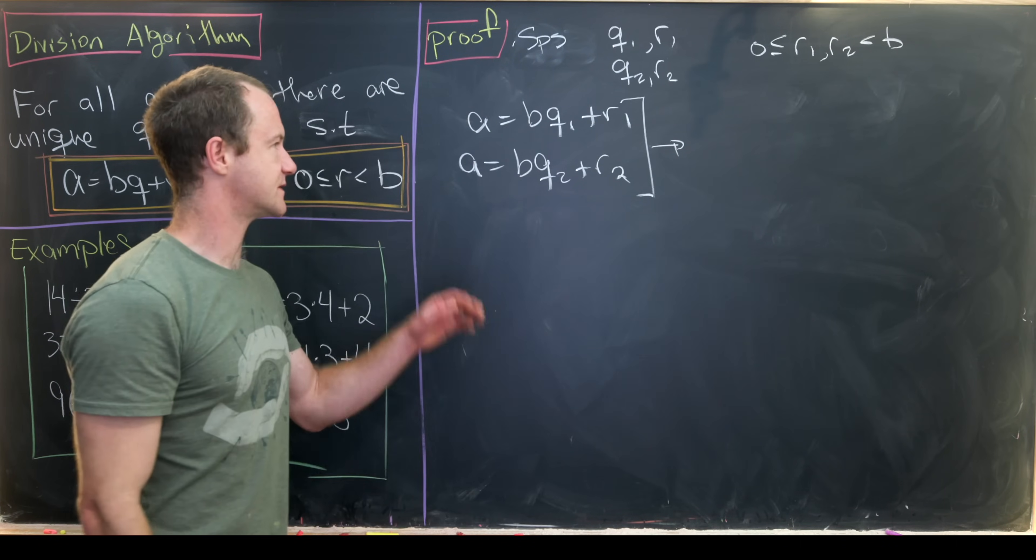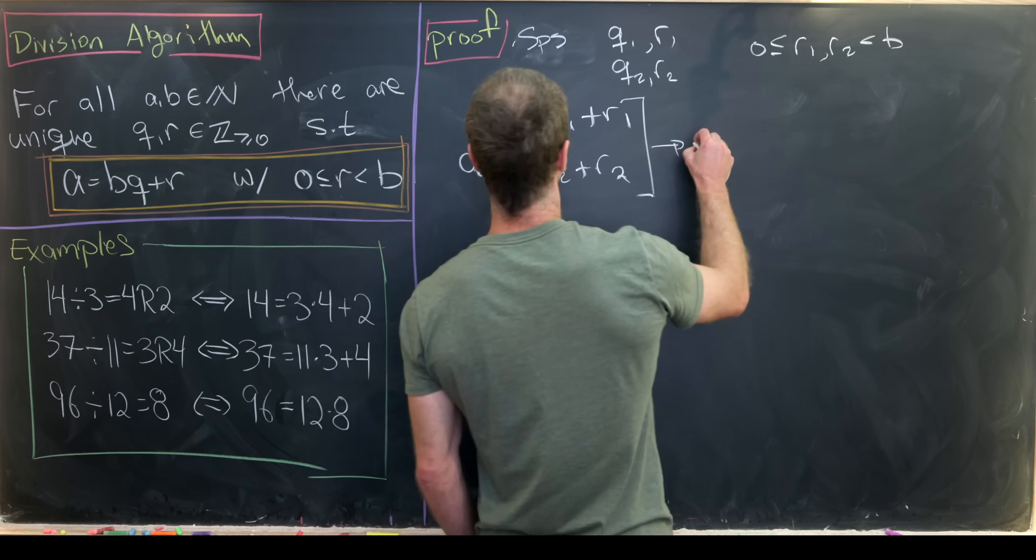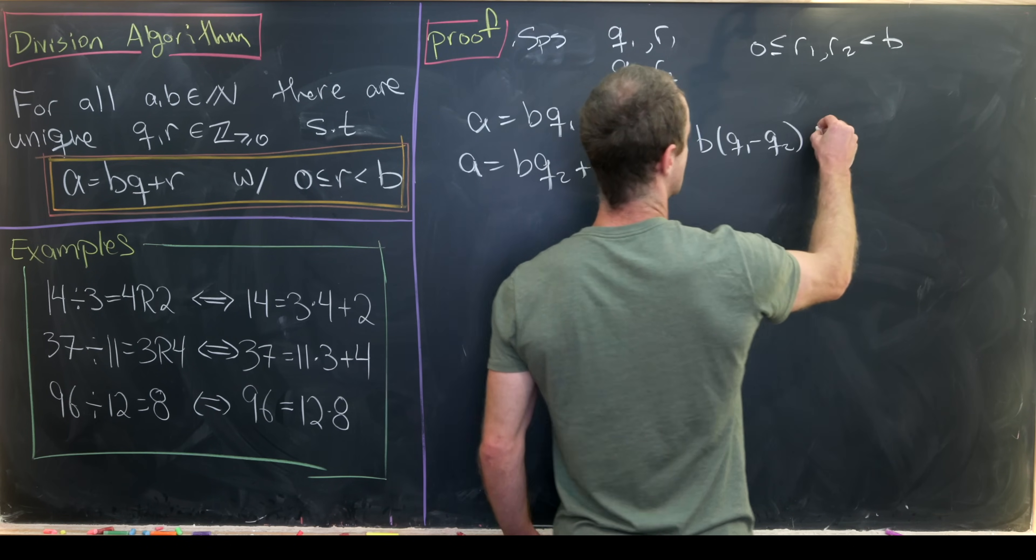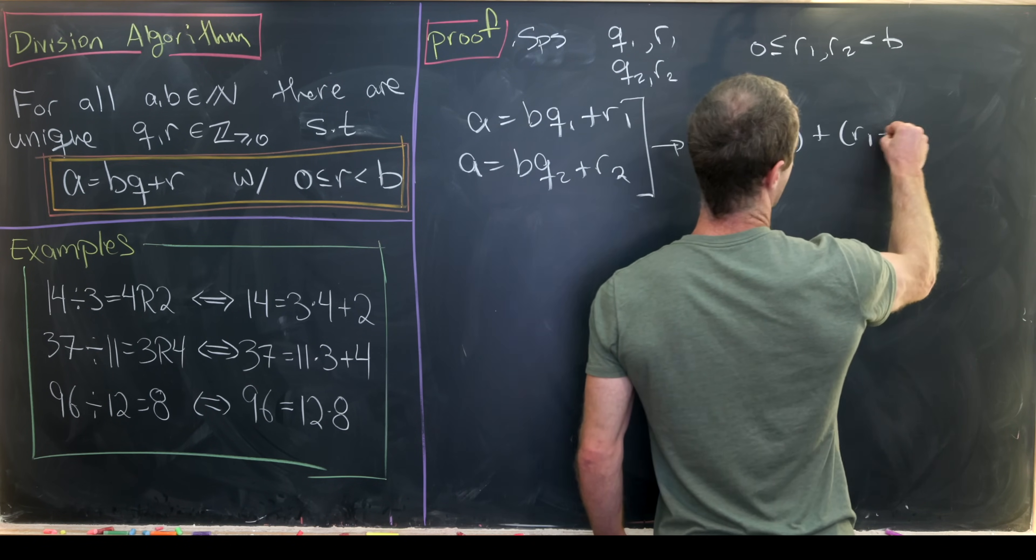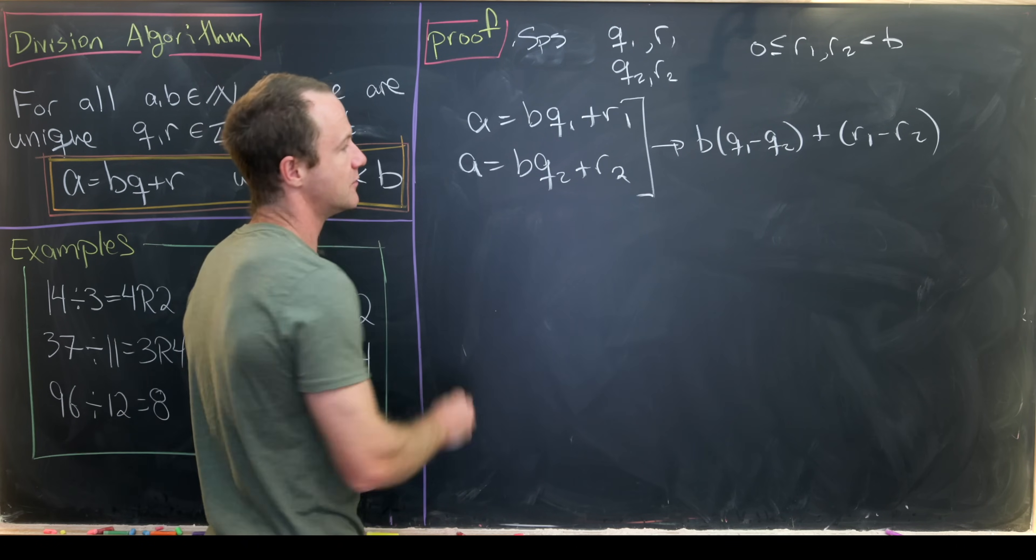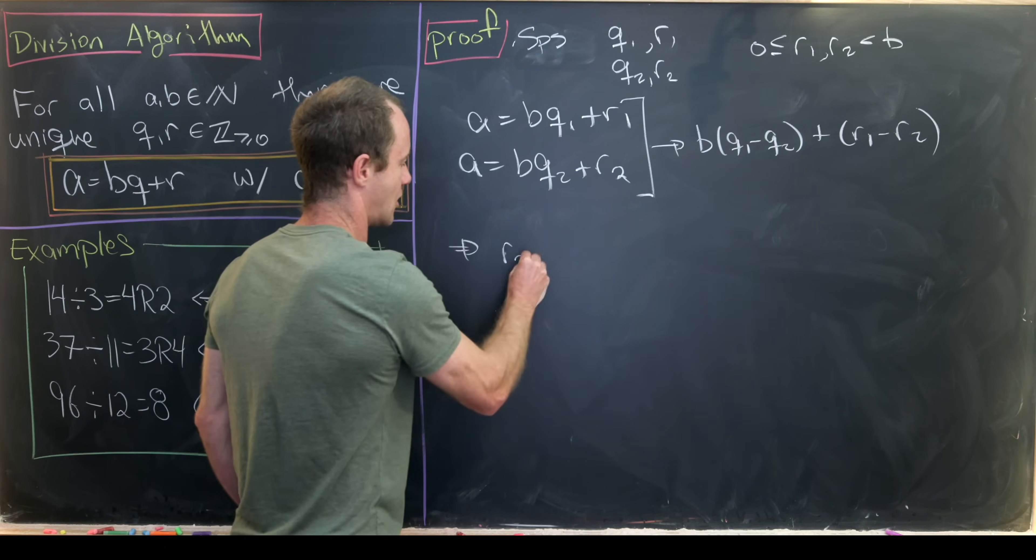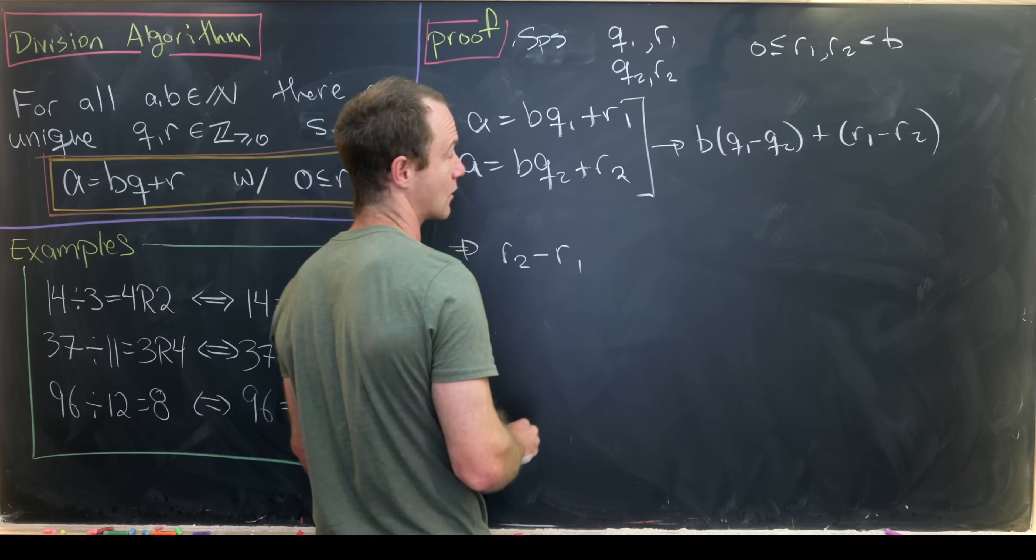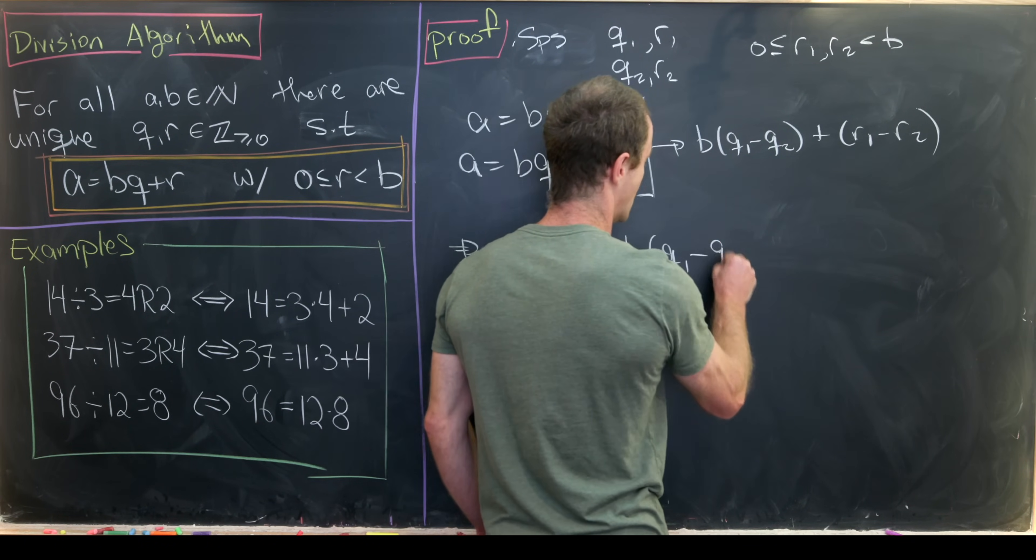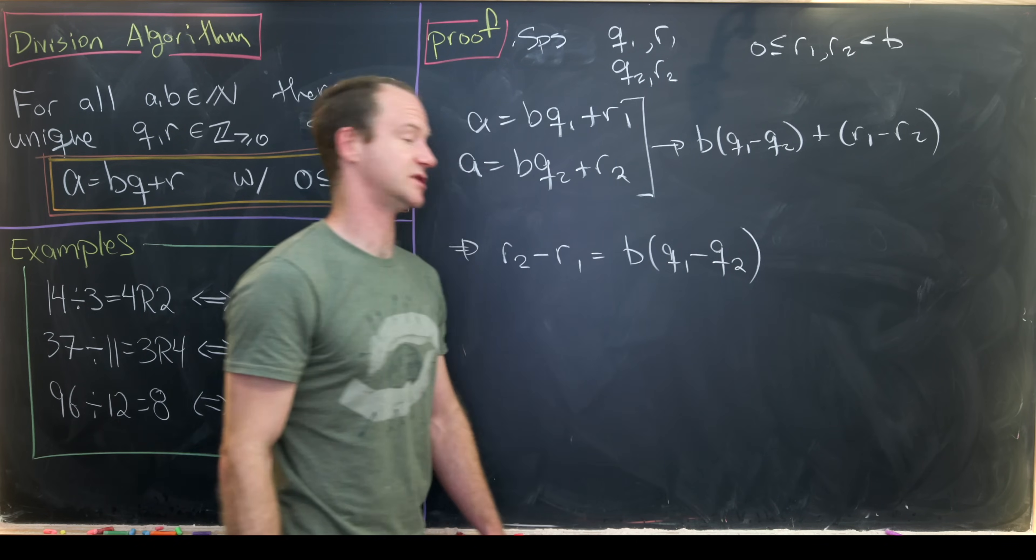So let's see what we get when we subtract these two equations. We'll have b(q1 minus q2) plus (r1 minus r2). But now notice that that tells us that r2 minus r1 is equal to b times (q1 minus q2).